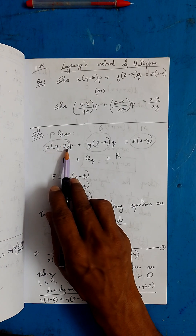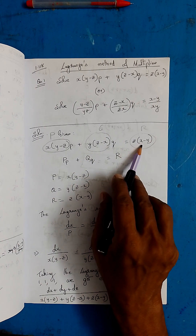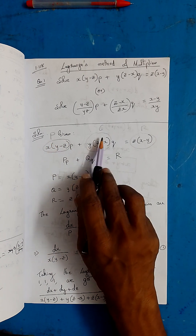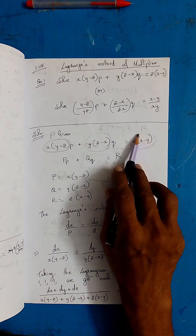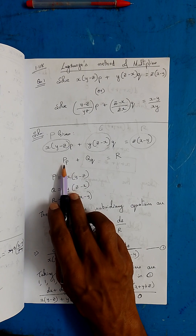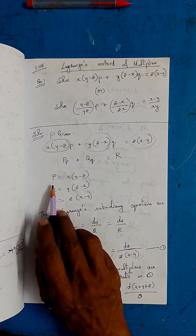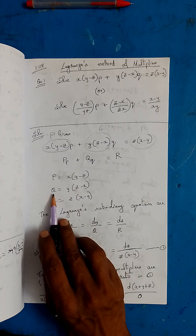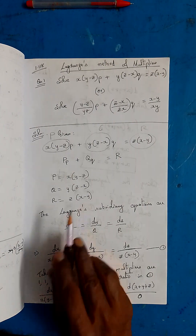The question is x(y−z)p + y(z−x)q = z(x−y). This is of the form P·p + Q·q = R, where capital P = x(y−z), capital Q = y(z−x), and capital R = z(x−y).